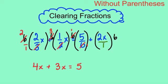Now we do have to remember, if there's no, like this 2x didn't have a fraction, you still have to multiply to it. So that becomes 12x. The whole point here was to get rid of the fractions, and we did.